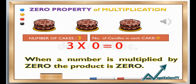Let's now proceed to the zero property of multiplication. In the zero property of multiplication, when a number is multiplied by zero, the product is zero. Look at the example: there are three cakes and no candles. So, 3 times zero equals zero. When a number is multiplied by zero, the product is zero. It is called the zero property of multiplication.